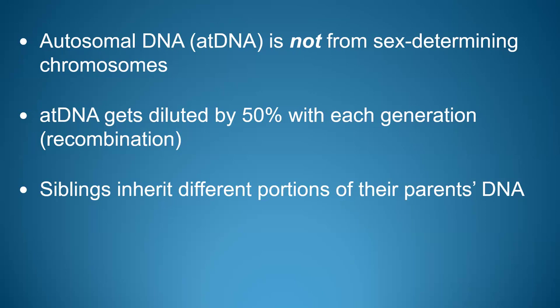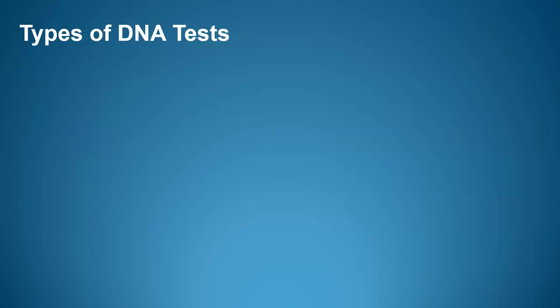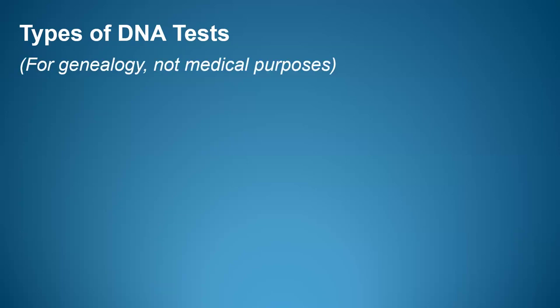It can be very helpful for family history to have your siblings take a test to help discover more about your family tree. Now let's shift our focus to the types of DNA tests we take for genealogy — not tests administered at a medical facility for medical purposes, just those for genealogy. The first is a Y-DNA test, the second is an MT-DNA (mitochondrial DNA) test, and the third is an autosomal DNA test, abbreviated atDNA.